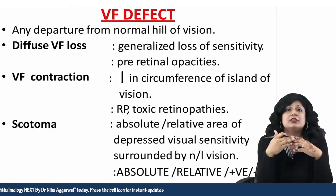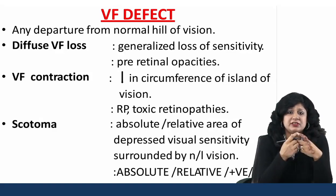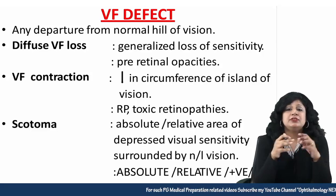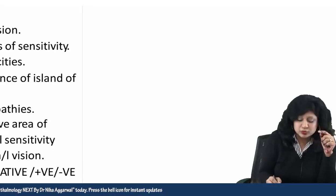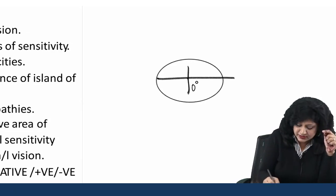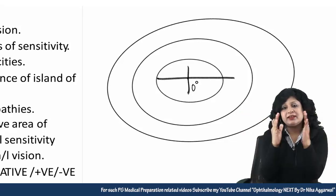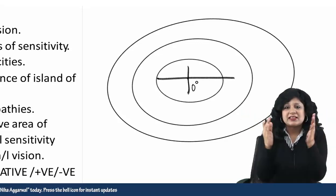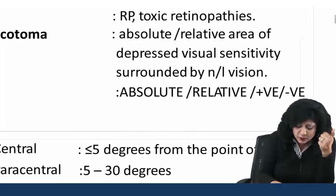Diffuse visual field loss means I have a generalized loss of sensitivity — I do not have any particular localized defect. While if I have a reduction in the circumference, visual fields are measured with respect to isopters. Starting with zero degrees, I will have different isopters. The whole visual field is divided into isopters. If my field is decreasing from the periphery towards the center — mostly this is the routine in glaucoma — that is called contraction of the isopters.